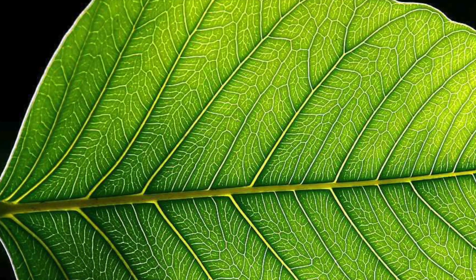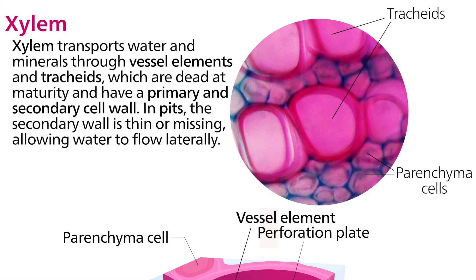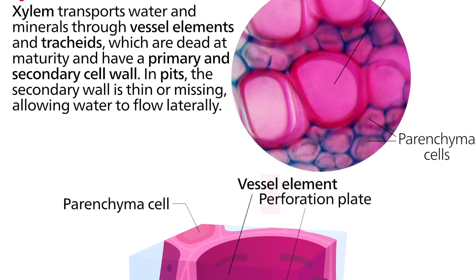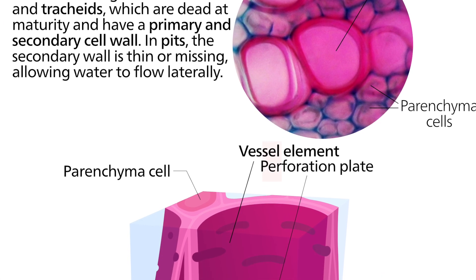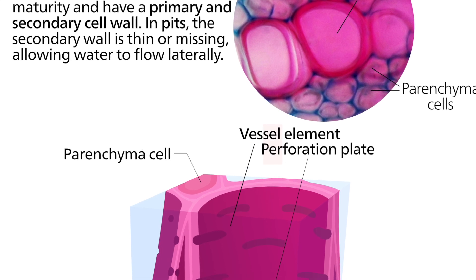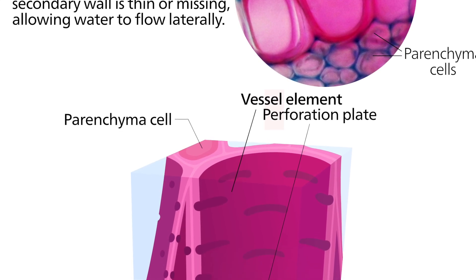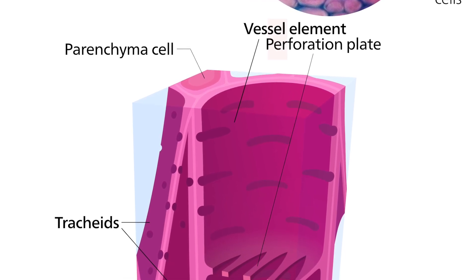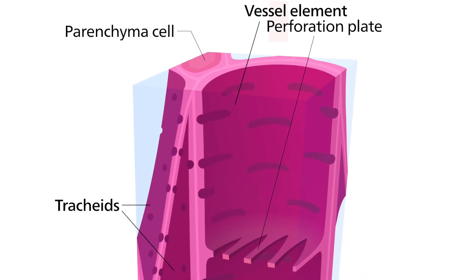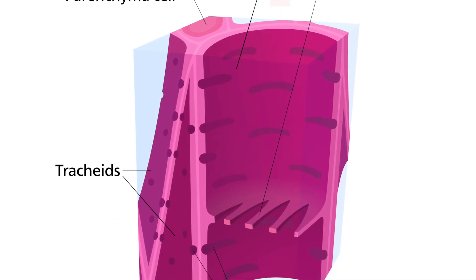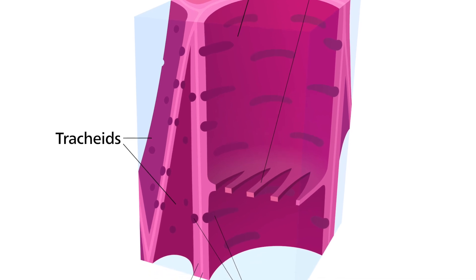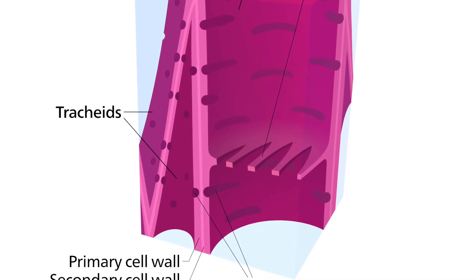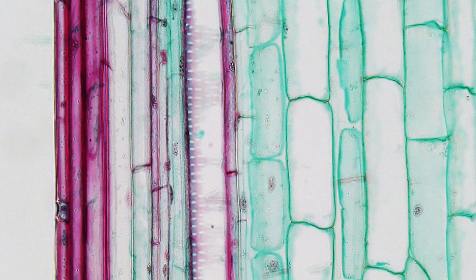The next one is xylem cells. Xylem is the transport tissue in plants that carries both the water and the mineral ions from the roots to the rest of the plant. Xylem is made from xylem cells which are adapted to their function — the cells die and then form long hollow tubes that allow water and mineral ions to move easily through them. The walls of xylem cells are also lignified.